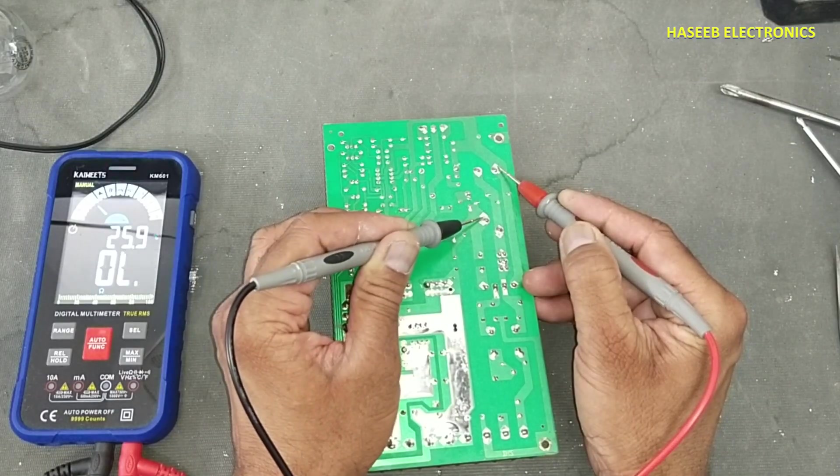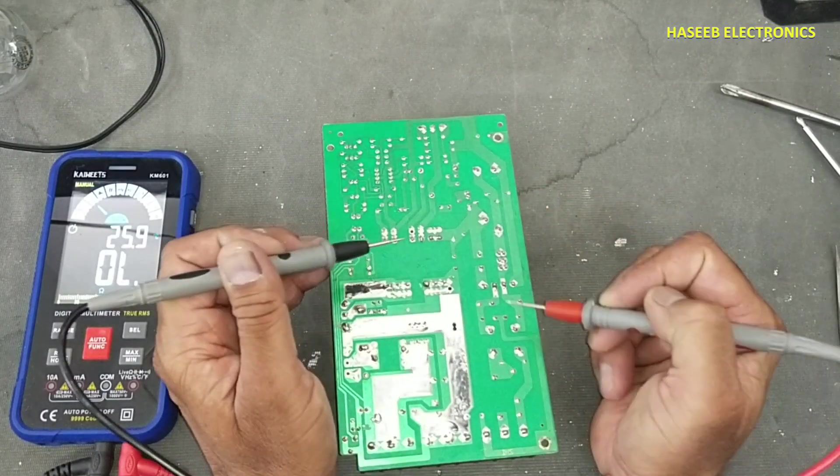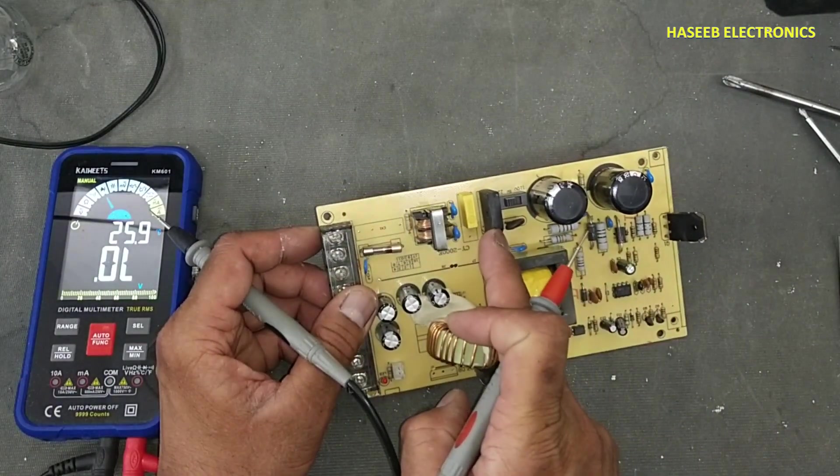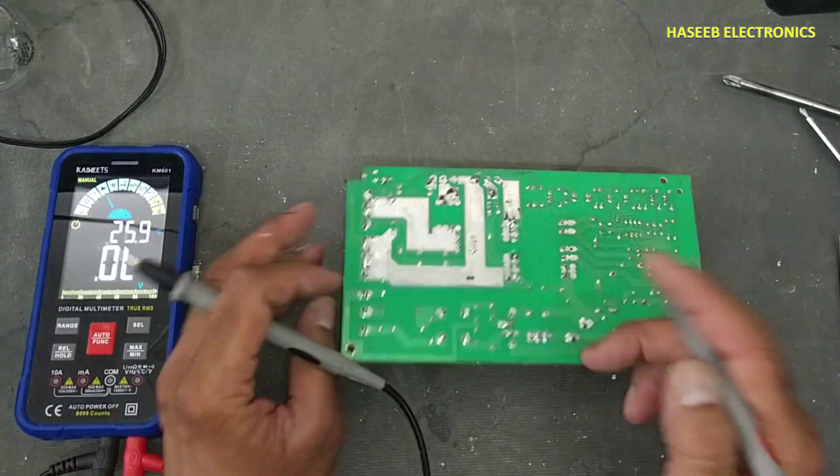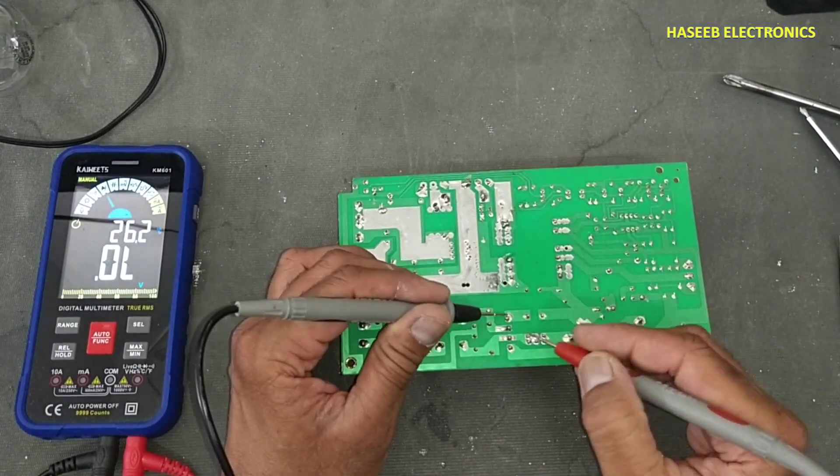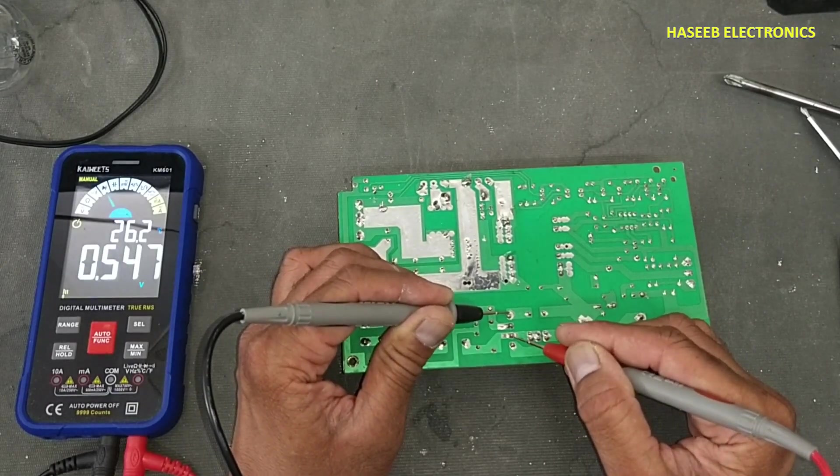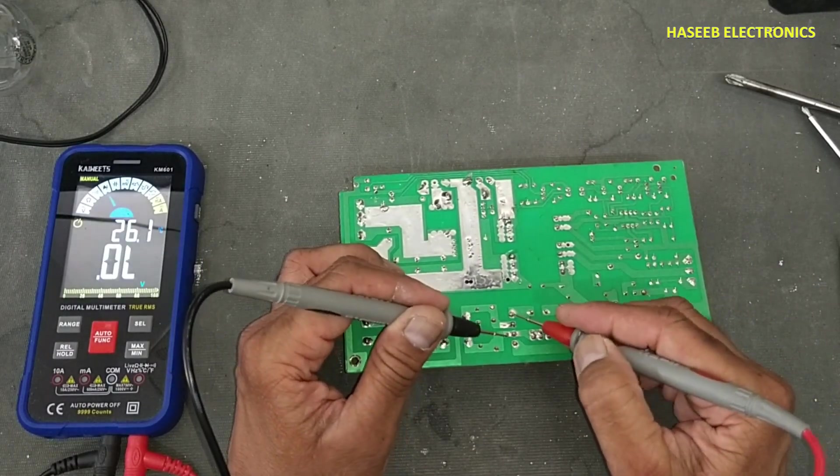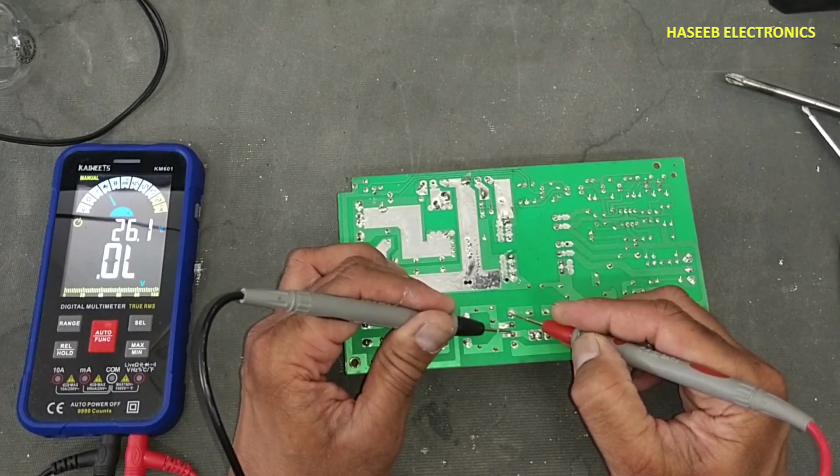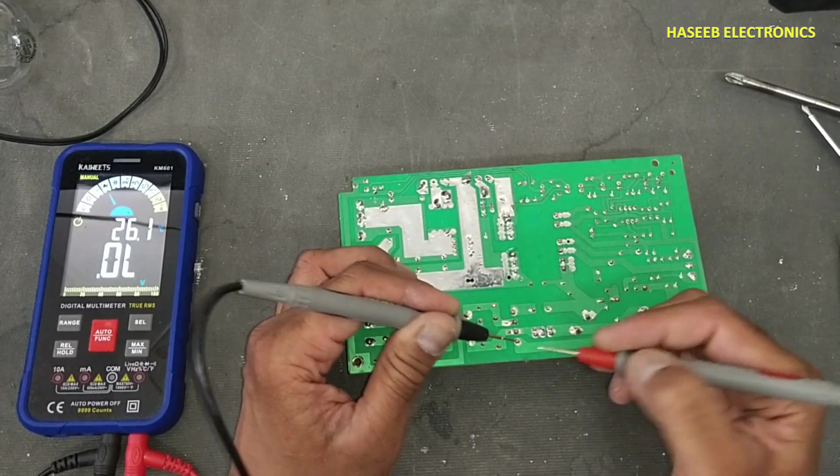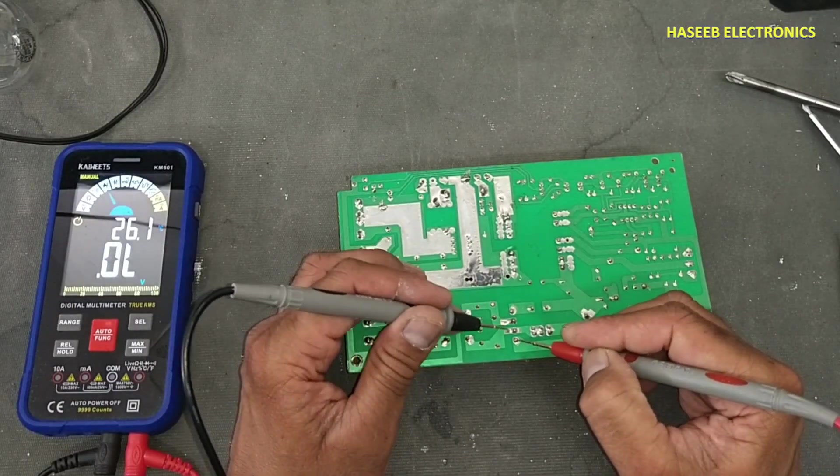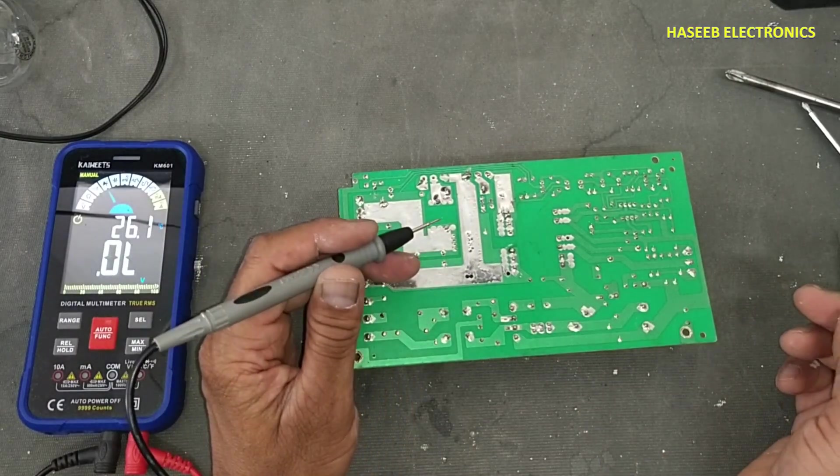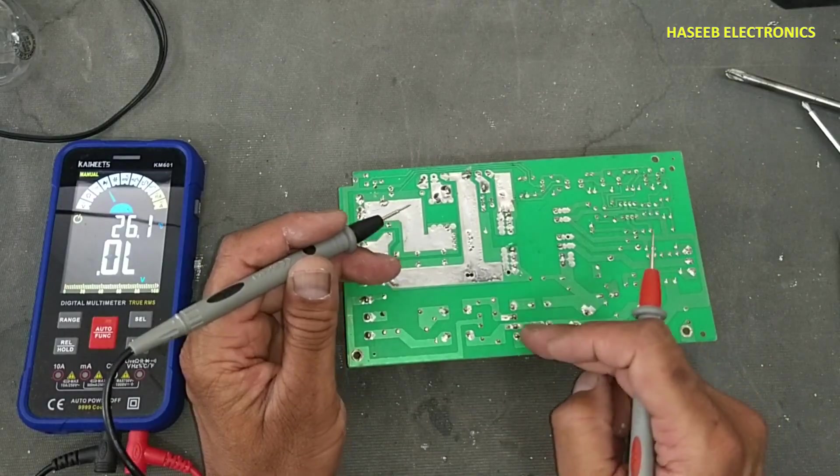It doesn't have short circuit at DC rail. The first step we will check bridge rectifier. This is cut side so it is positive terminal. At positive terminal we will place black lead. One diode, second diode, okay. Now red lead here. Open, open, open, okay. Red lead at negative terminal. One diode, second diode. So that means bridge rectifier is good.